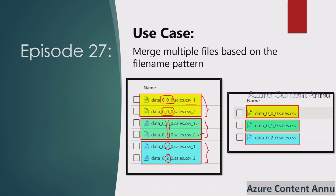Our requirement is we need to merge files based on their file name pattern. Wherever these patterns are matching, we have to merge those files and create a single output file named data_0_0_0.sales.csv. The invalid extension in the source file should be removed and it should have csv as the extension. The data in these two files should be merged into a single file — suppose this file has two records and this file has one record, then after merging it should have three records.